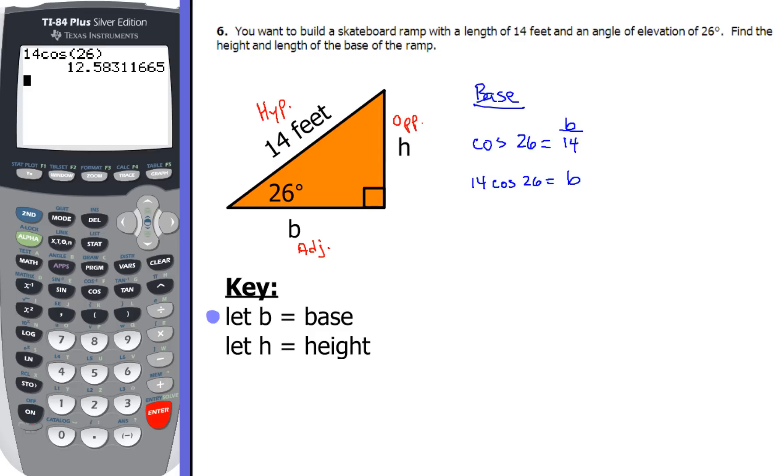After we make sure our mode is set up correctly, we're going to type that in, 14 cosine 26 into our calculator, and you'll end up with a value of 12.58 and so on. So we're going to write that down for our base: 12.583 is about what our base is.